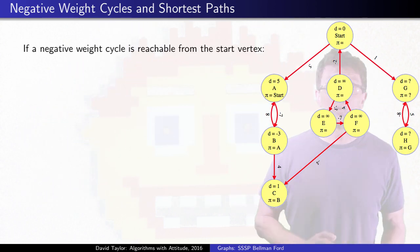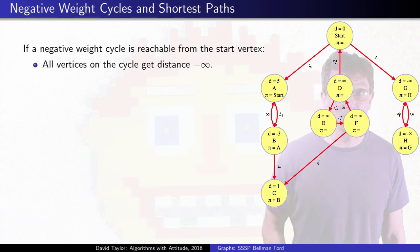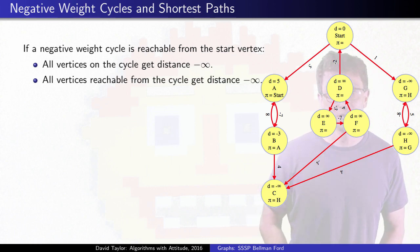We mark nodes on any reachable negative cycle as having weight negative infinity. If there is an edge from that cycle to C, that node is reachable through a negative weight cycle, its distance becomes negative infinity too.